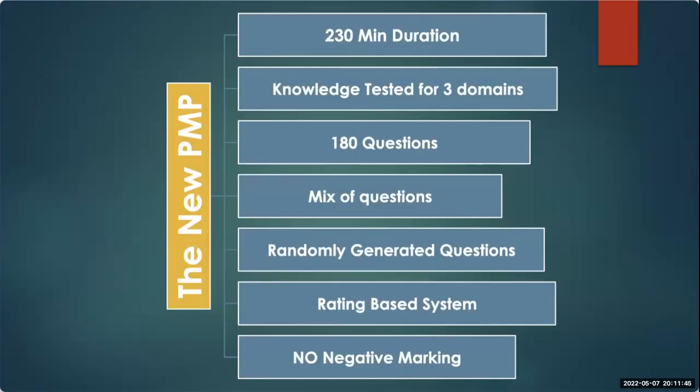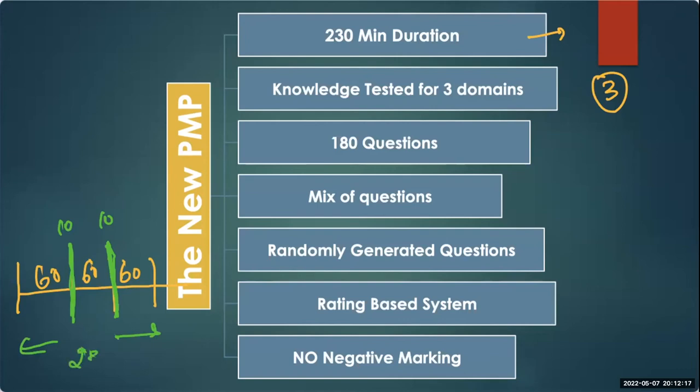The PMP exam is 230 minutes duration. It is divided into three sections. You would have 60 questions in one section, so 60, 60, 60. There is an optional break of 10 minutes given after you complete 60 questions. So 10 minutes here, 10 minutes here. Total duration of the examination time is 230 minutes. There is no time limit on how you would complete each section. If you finish this section in 80 minutes, it's fine, or if you take full 230 minutes to finish section A, nobody's going to stop you. You decide when to finish which section.